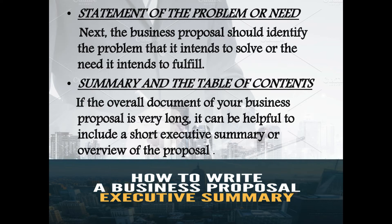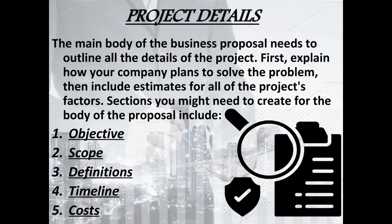Summary and table of contents: if the overall document of your business proposal is very long, it can be helpful to include a short executive summary or overview of the proposal. Project details: the main body of the business proposal needs to outline all the details of the project. First, explain how your company plans to solve the problem, then include estimates for all of the project's factors.